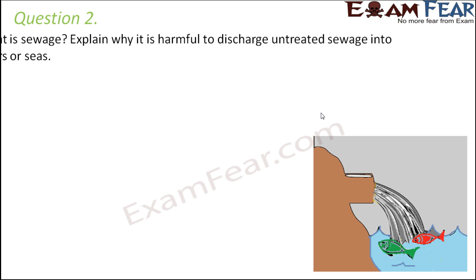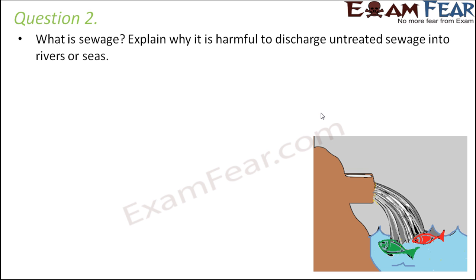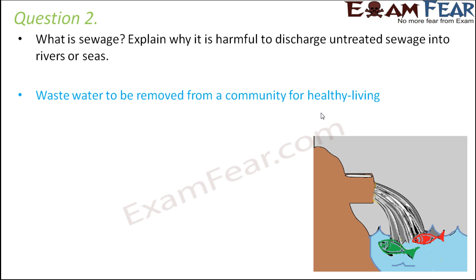Question two — what is sewage, and why is it harmful to discharge untreated sewage into rivers or seas? Sewage is the wastewater that needs to be removed from a community for healthy living. It comes out of each household and contains harmful substances like organic waste, animal excreta, urea in the form of urine.